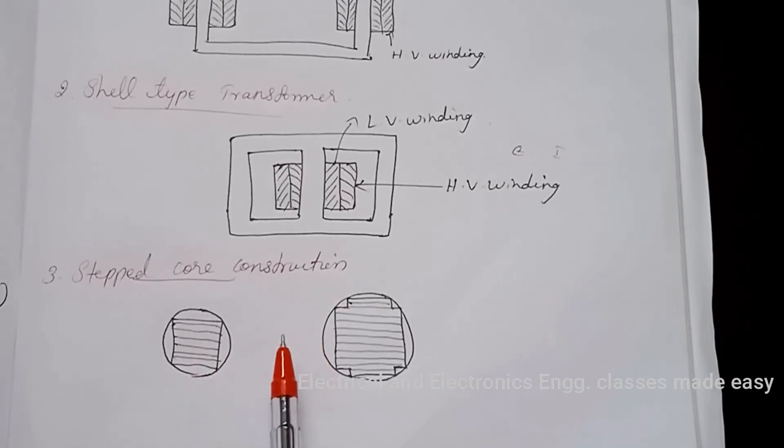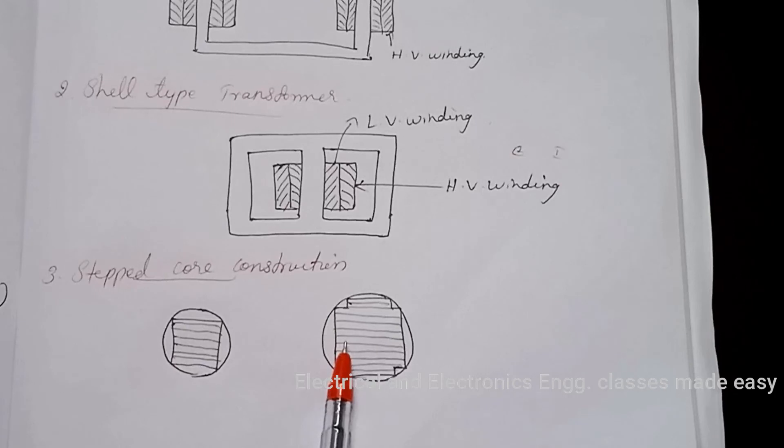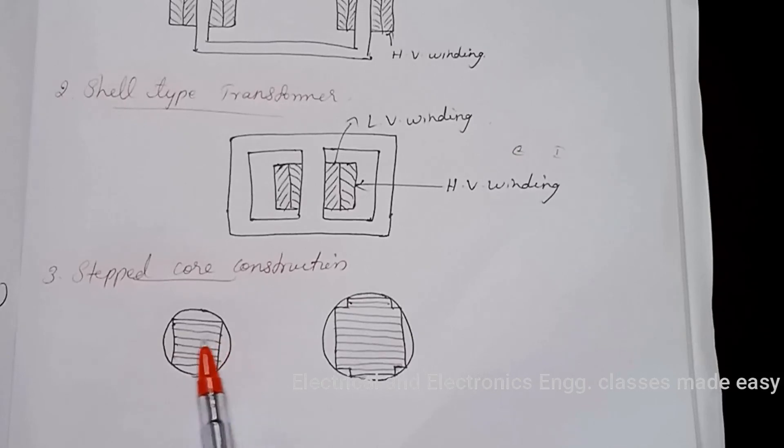For very large transformers, further core stepping is done. Core stepping involves high space factor. So, this is cruciform core and this is stepped core construction.